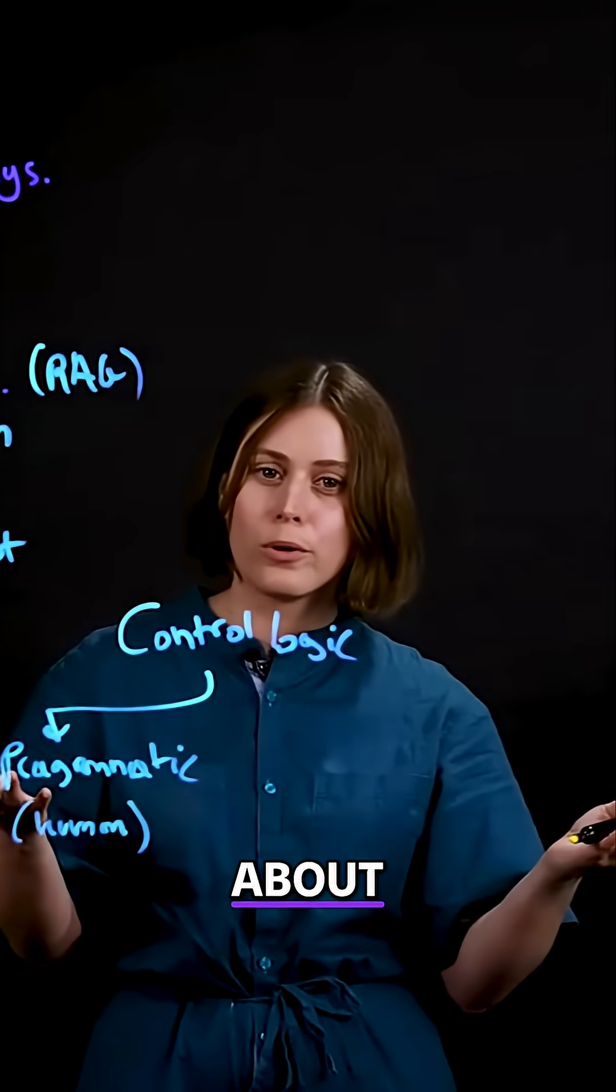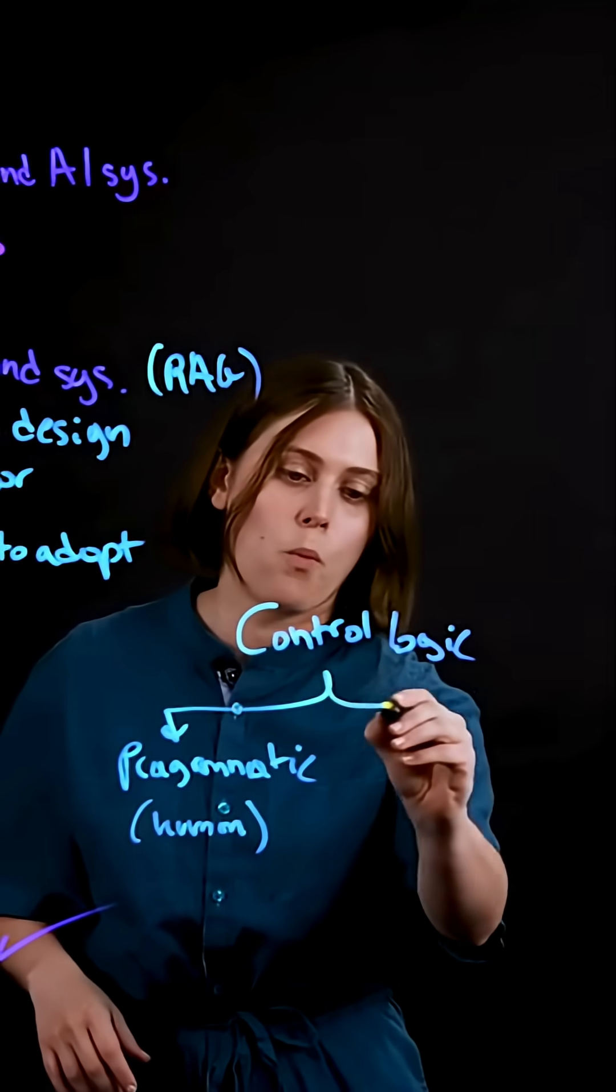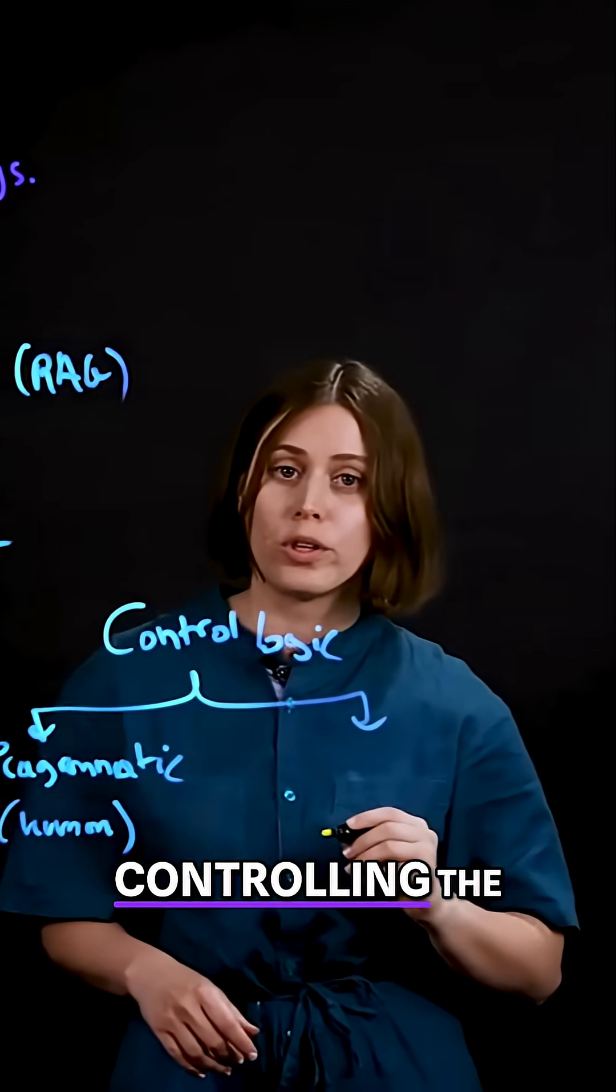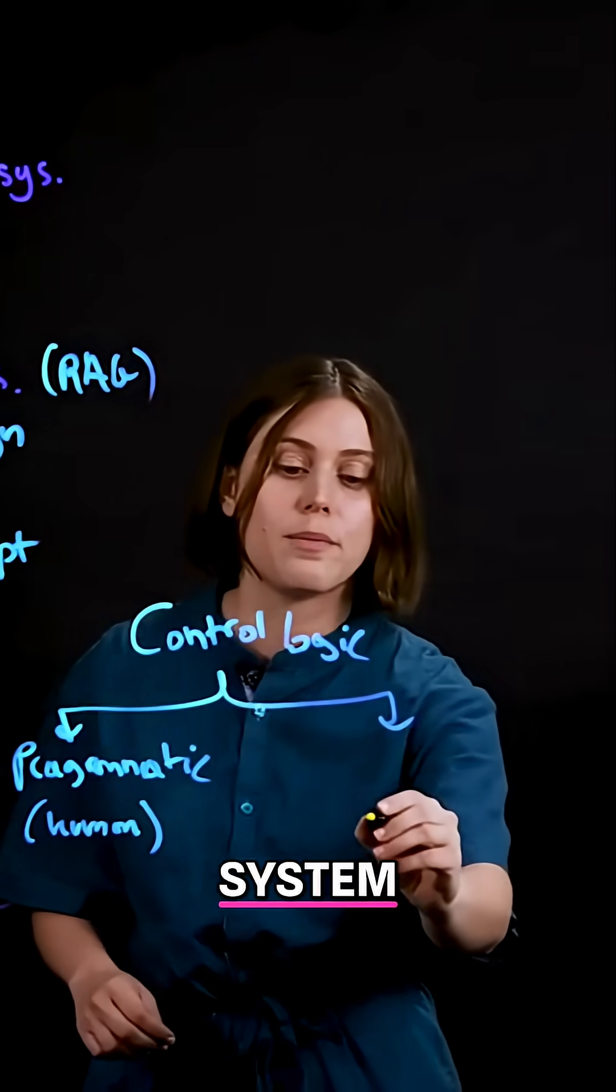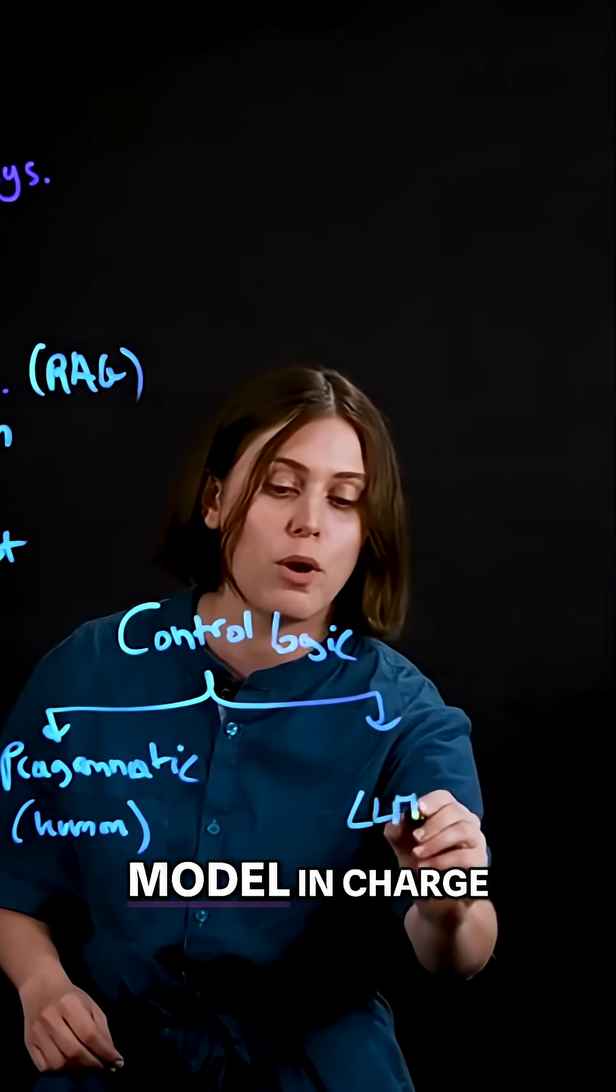Now, let's talk about where do agents come in. One other way of controlling the logic of a compound AI system is to put a large language model in charge.